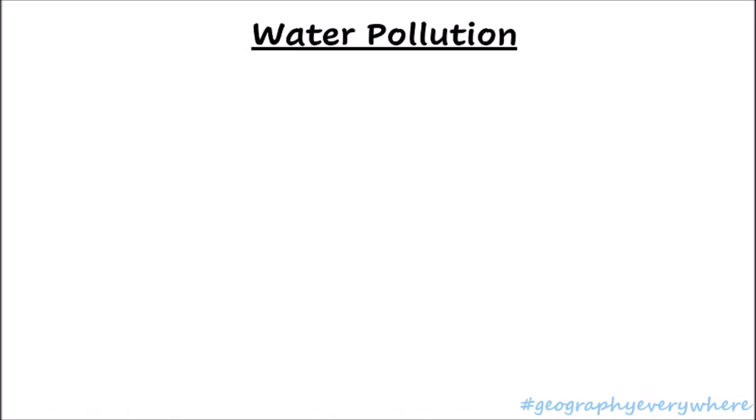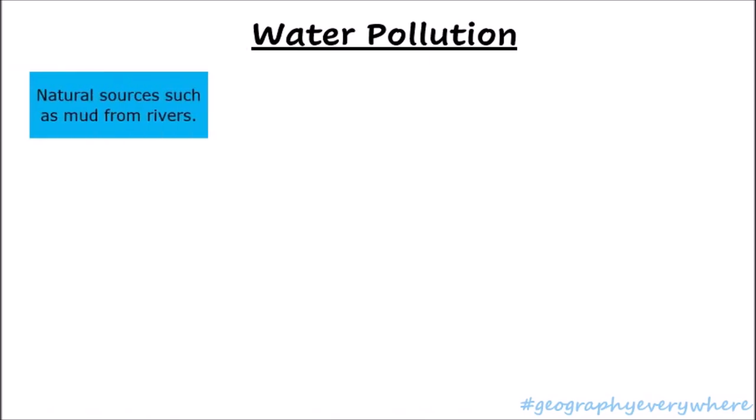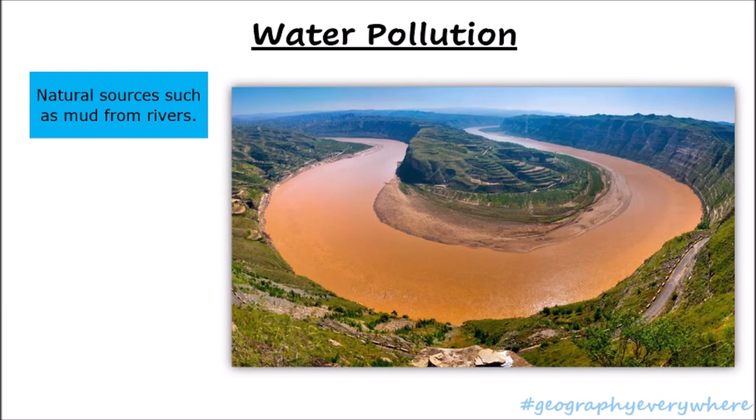Let's look at water pollution now. Sometimes mud flows in rivers. An example is the Yellow River — you can see that the river water is not clear. This is natural mud that has been carried down from the surrounding areas. The mud in this river makes the soil fertile and encourages people to farm. But human activity also contributes to water pollution.